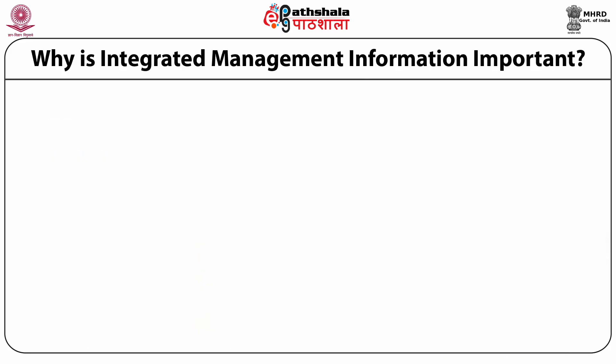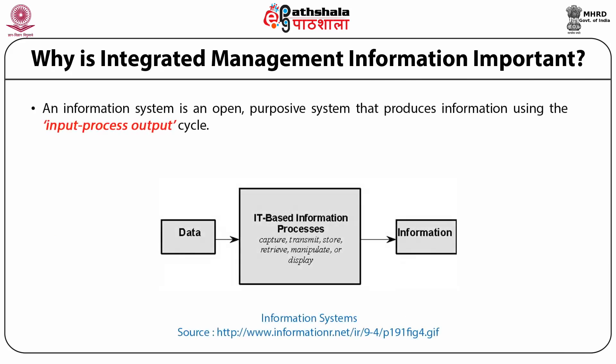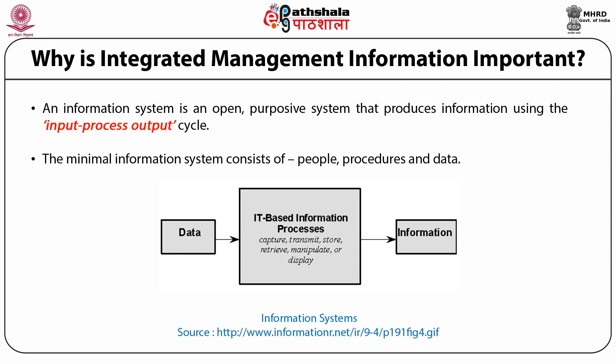Let us try to understand why integrated management information is important. An information system is an open purposive system that produces information using the input-process-output cycle. The minimal information system consists of people, procedures, and data. People follow procedures to manipulate data and produce information. However, today information systems are an organized combination of people, hardware, software, communication networks, and data resources that collate, transfer, and disseminate information in an organization.